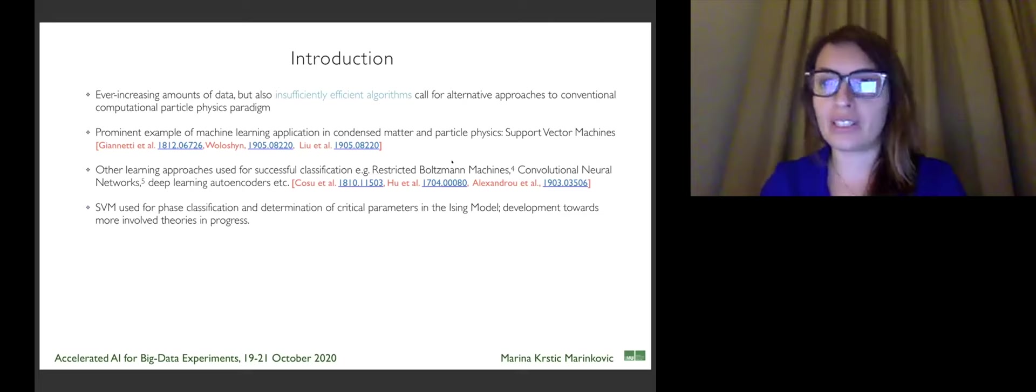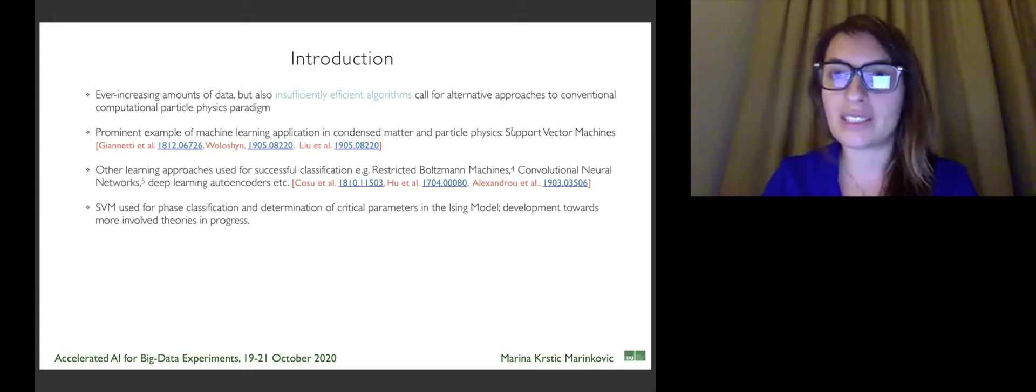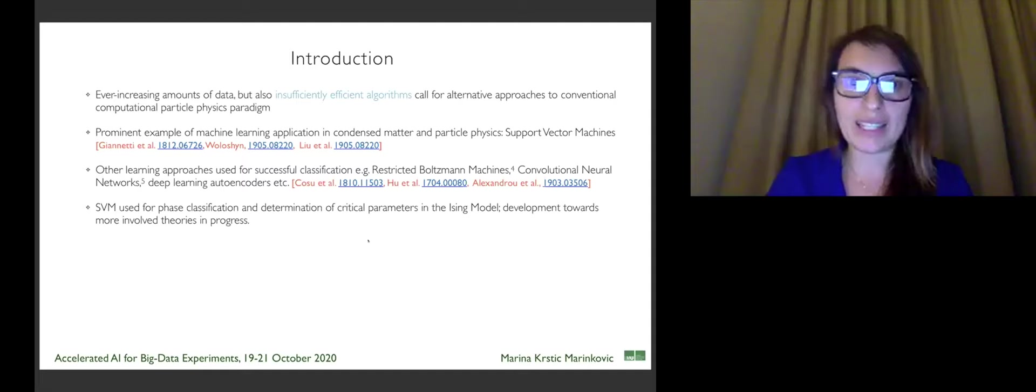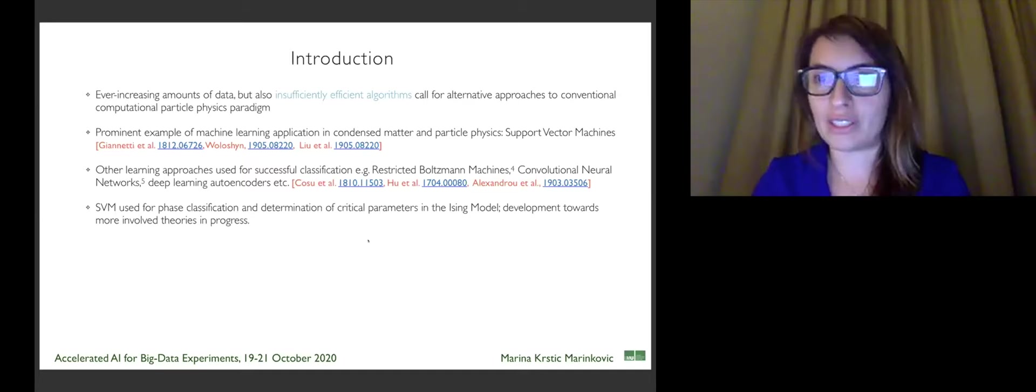Different machine learning techniques have been applied already to determining phase diagrams, however, only in lower dimensional systems so far. Two-dimensional models was the most commonly studied system with different types of machine learning techniques, such as support vector machine, restricted Boltzmann machines, deep learning autoencoders, and so on. In our work, we focus on the next step.